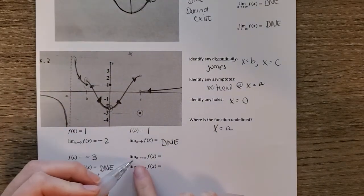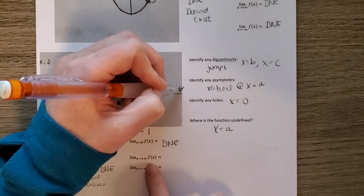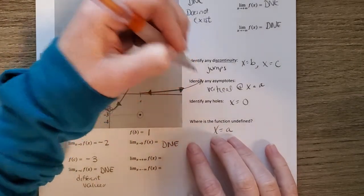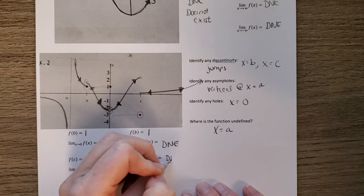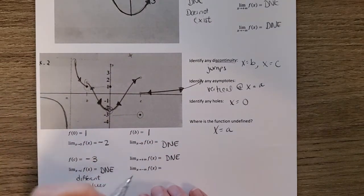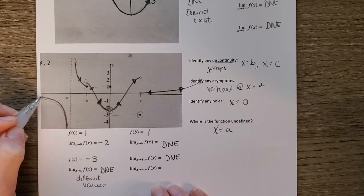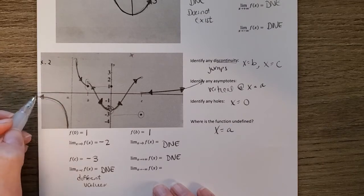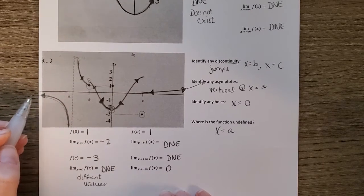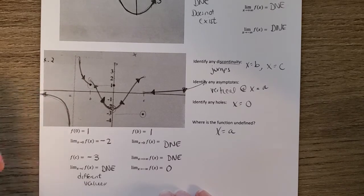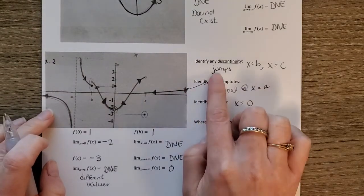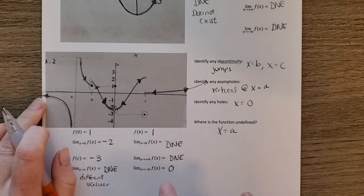Now for end behaviors: as x goes toward positive infinity, the graph curves upward and continues forever, so there's no limit — it does not exist. As x goes toward negative infinity, the graph appears to approach the x-axis, getting closer and closer. So the limit there is zero, or y equals zero. If the end goes on forever, DNE; if it approaches a specific value, you write that value.